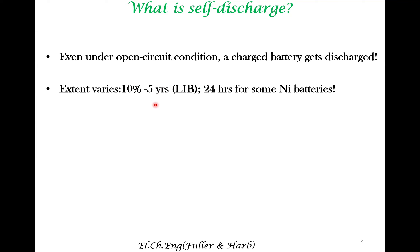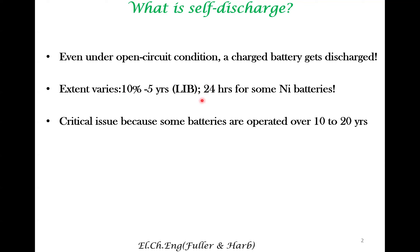For example, in a lithium-ion battery, there is a 10% decrease in capacity in the charge stored in about 5 years, which is not too bad. But in certain other battery chemistries, for example in nickel-based batteries, the 10% self-discharge can occur just in about 24 hours. This is fairly serious and rather disadvantageous because you want to be operating some batteries over a period of 10 to 20 years. So you do want to decrease the self-discharge that occurs in a charged battery.